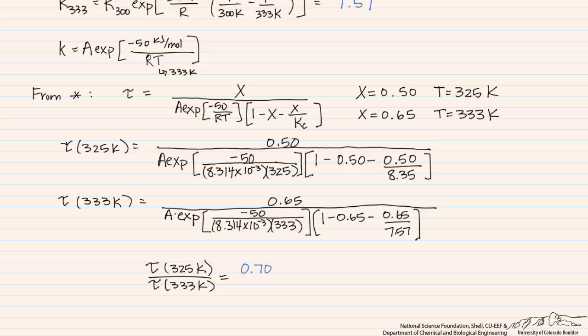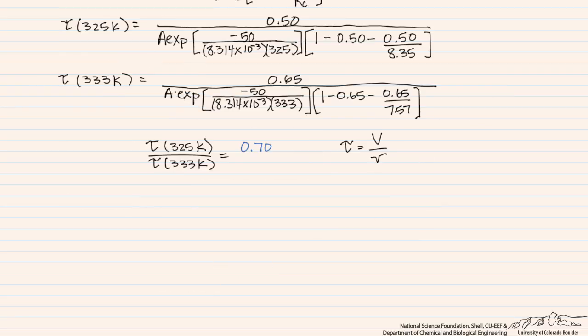That ratio of space times is directly and reciprocally related to the ratio of volumetric flow rates at the two conditions. It takes a longer space time at the higher conversion and temperature, which means the volumetric flow rate must be lower. Starting with a volumetric flow rate of 10 liters per minute at 325 K, we multiply by 0.7 and find we need 7 liters per minute to achieve the higher conversion. A longer space time and therefore lower flow rate is required to achieve that higher conversion.